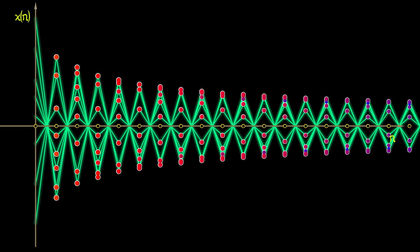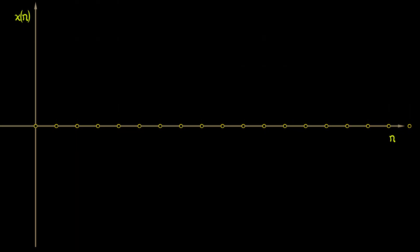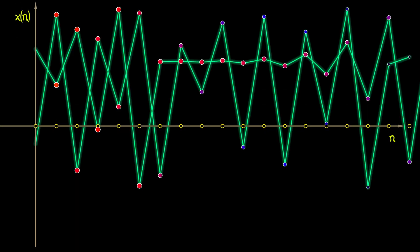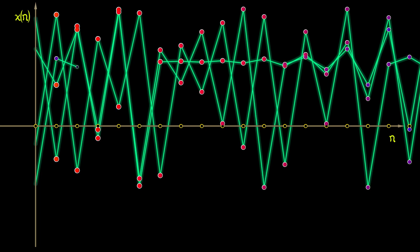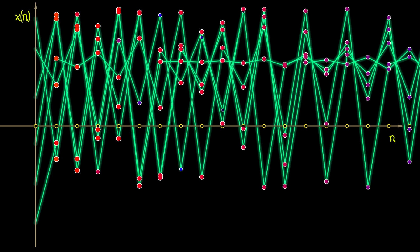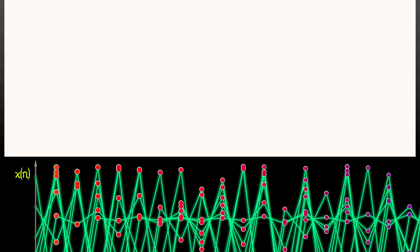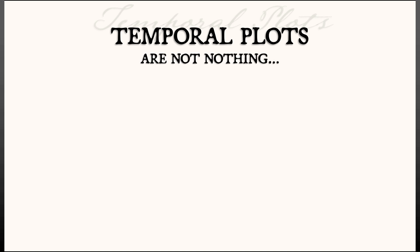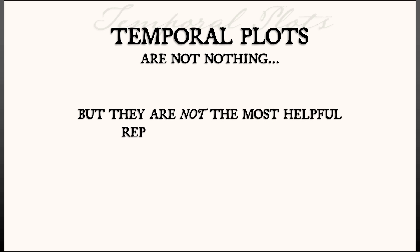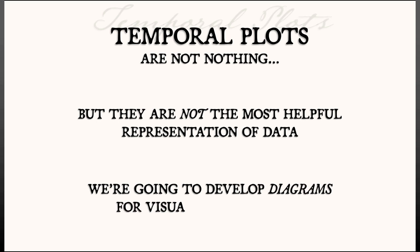There's even worse: later in this chapter we'll see that you can have discrete time systems where, if you try to plot the solutions over time, they're all crisscrossed, all on top of each other — a real mess. These temporal plots are something, they're somewhat useful, but they are not the most helpful representation of data. So our next step is going to be to develop some different methods, different approaches to visualizing dynamics. These are things we're going to call diagrams.